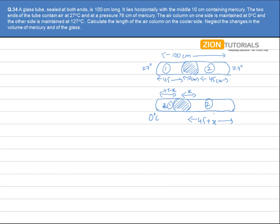Compartment one is maintained at 0 degrees Celsius, and compartment two becomes 127 degrees Celsius. The problem states that two ends of the tube contain air at 27 degrees Celsius and a pressure of 76 centimeters of mercury. The air column on one side is at 0 degrees Celsius and the other at 127 degrees Celsius. We need to calculate the length of the air column on the cooler side. We also neglect changes in the volume of mercury and the glass.